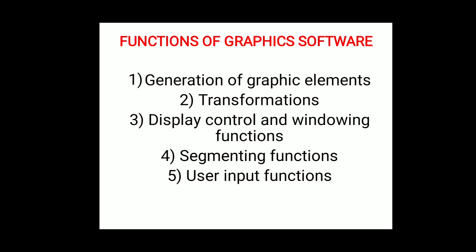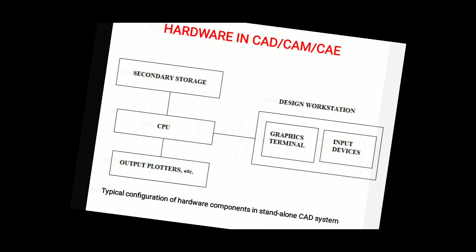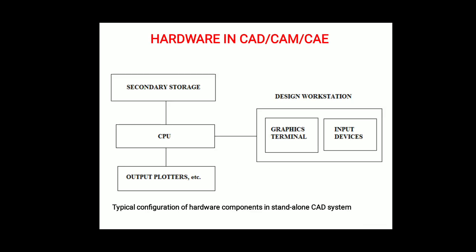These are the important functions of graphics software. Regarding hardware in CAD/CAM/CAE, the system is divided into two parts: first, the design workstation which has a graphics terminal and input devices; and second, the processing side with secondary storage, CPU, and output devices.